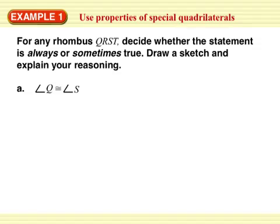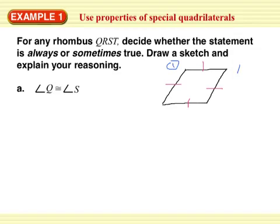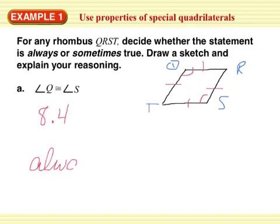Let's do an example. For any rhombus QRST, decide whether the statement is always or sometimes true — draw a sketch and explain your reasoning. Let's draw a rhombus — a squished square with four congruent sides — and label it QRST. The statement is: angle Q is congruent to angle S. By definition, a rhombus is a parallelogram with four congruent sides. Theorem 8.4 says opposite angles of a parallelogram are congruent, so this statement is always true.